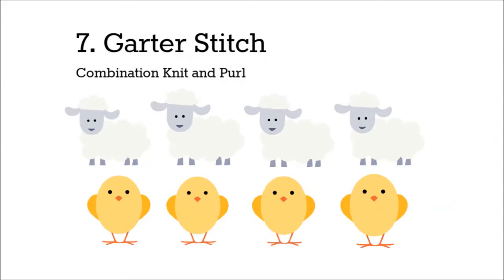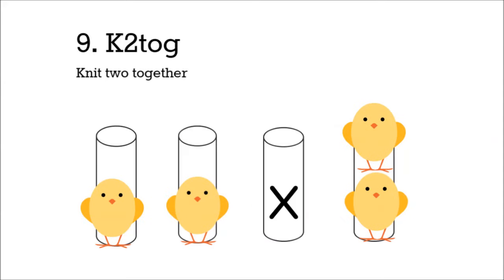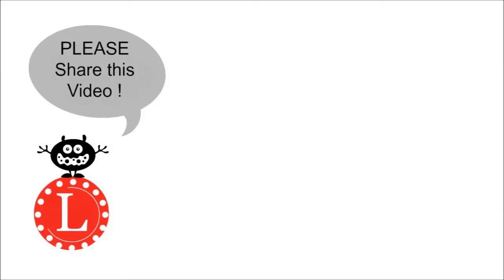Do you remember all 10 of those stitches? Four knit stitches, a purl, a rib, garter, the yarn over, the knit two together, or purl two together. All right guys, share this video because it helps me a lot, and remember to love with your looms.